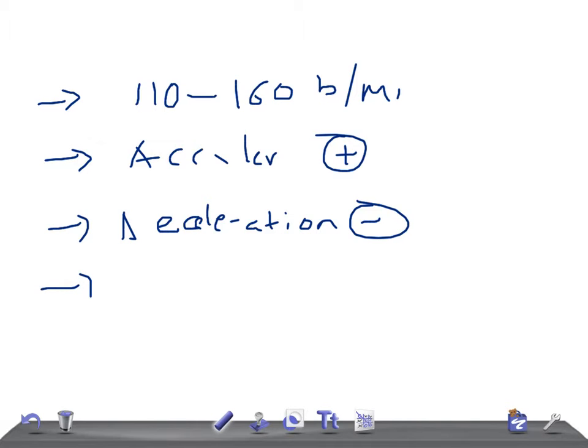of deceleration—variability, variable deceleration. We'll talk about that later. Then variability. Variability is present. What's